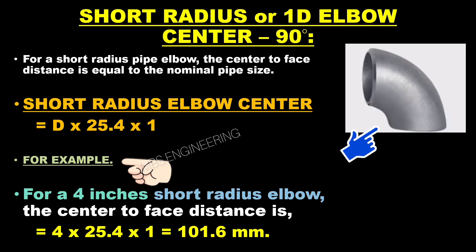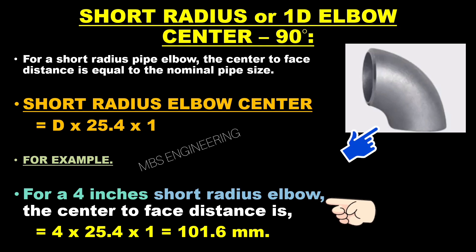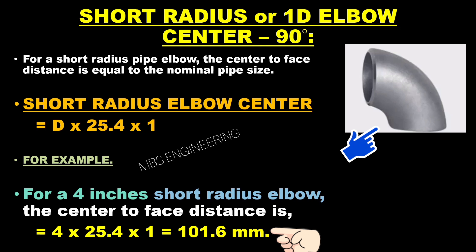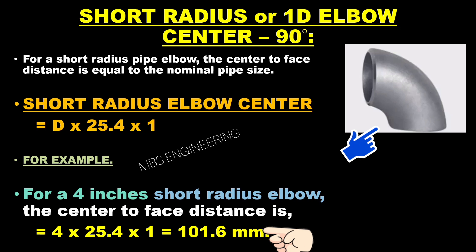For a 4-inch short radius elbow, the center-to-face distance is calculated as: 4 × 25.4 × 1. Therefore, the center-to-face distance for a 4-inch short radius elbow is 101.6 millimeters.